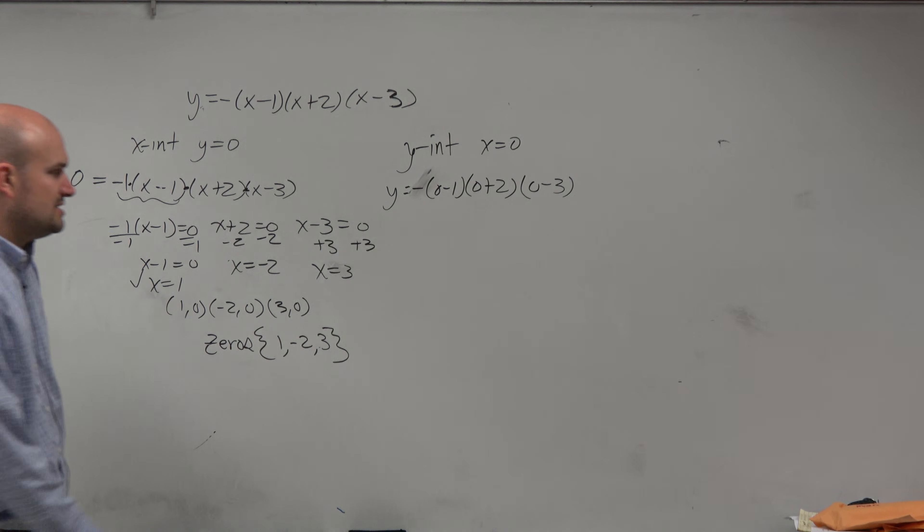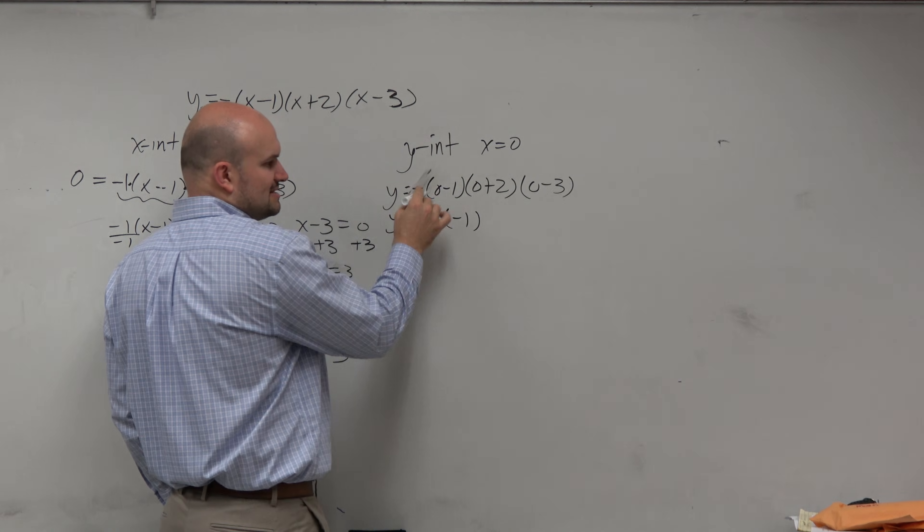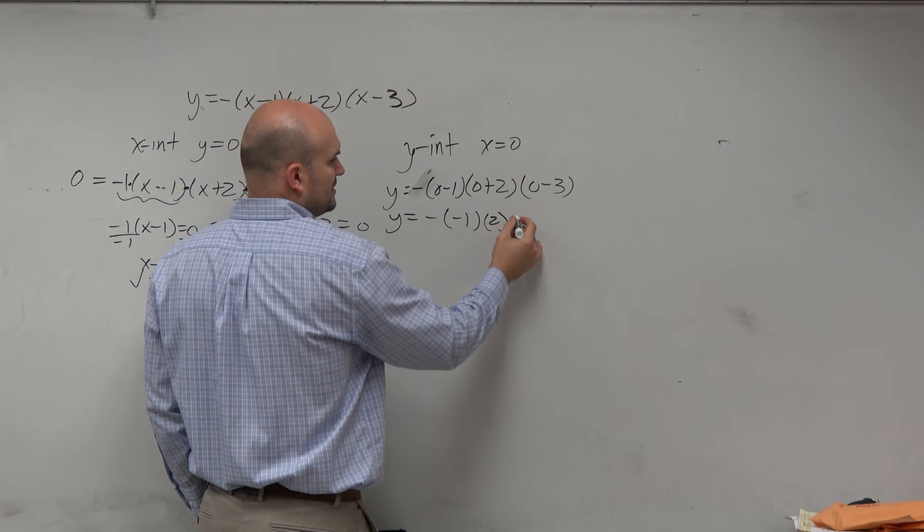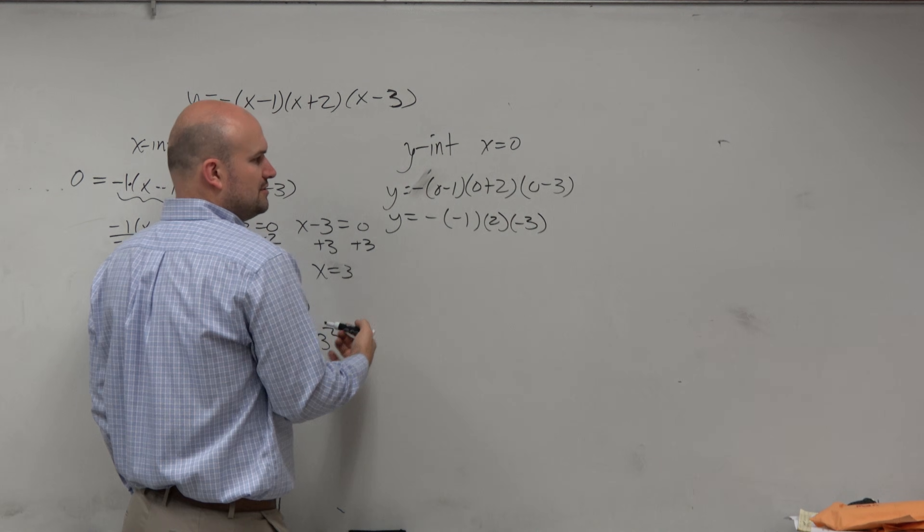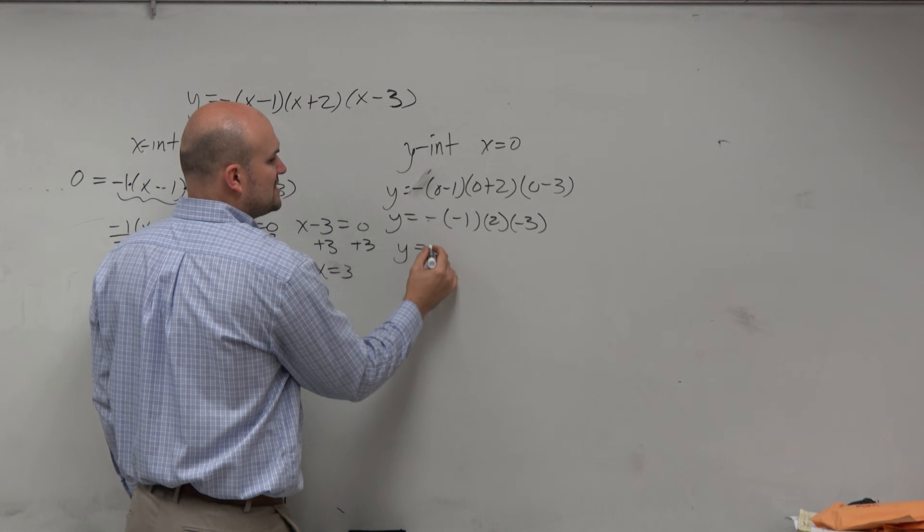So we have 0 minus 1 is negative 1. Remember that minus is like a negative 1, right? I'll just leave the minus 1. 0 plus 2 is 2, negative 3. So let's do this. Negative times negative 1 is positive 1, times 2 is positive 2, times 3 is y equals negative 6.